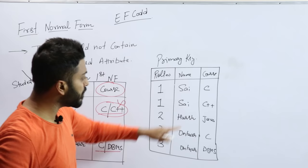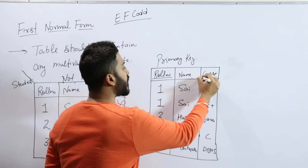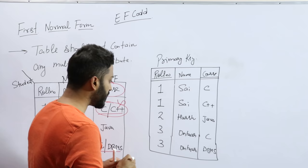But if I combine roll number and course, then definitely it will be the primary key. So the primary key will be roll number plus course combined, which is called a composite primary key.